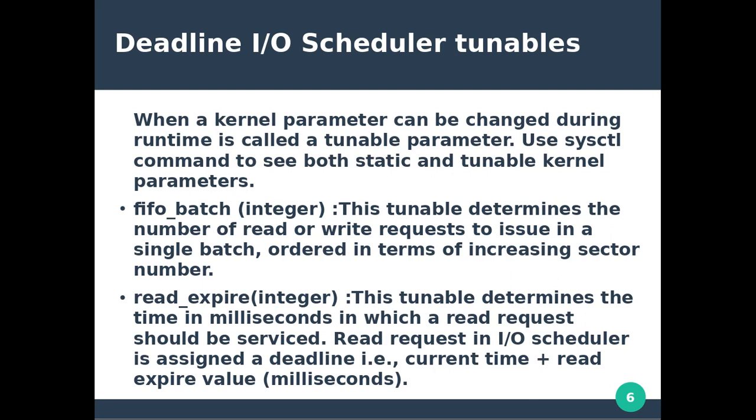The first tunable parameter is fifo_batch, an integer. This tunable determines the number of read or write requests to issue in a single batch, ordered in terms of increasing sector number. The integer value specifies how many read or write requests are issued in a single batch.